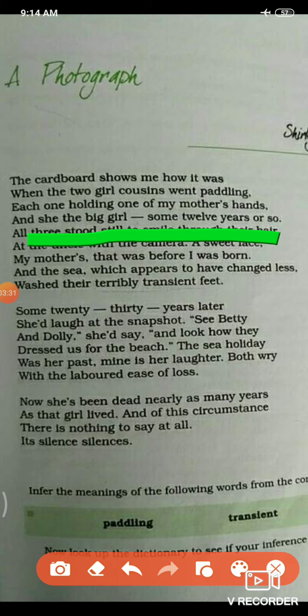In this line, the poet is looking at an old photograph album made up of cardboard — as you can see, the word 'cardboard' which I have underlined. In the picture, there are three girls walking on the beach holding each other's hands. The girl in the middle is the tallest and oldest. The other two girls on each side are younger than her. The girl in the middle is the poet's mother, who is around twelve years old when the picture was taken.